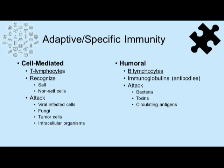We also have the humoral component of the adaptive immune system. This involves B lymphocytes developing and maturing into plasma cells, which produce immunoglobulins. An immunoglobulin is a fancy word for an antibody, which attacks bacteria, toxins, and circulating antigens.